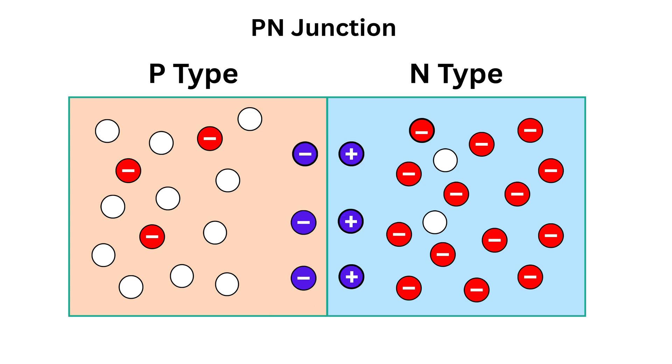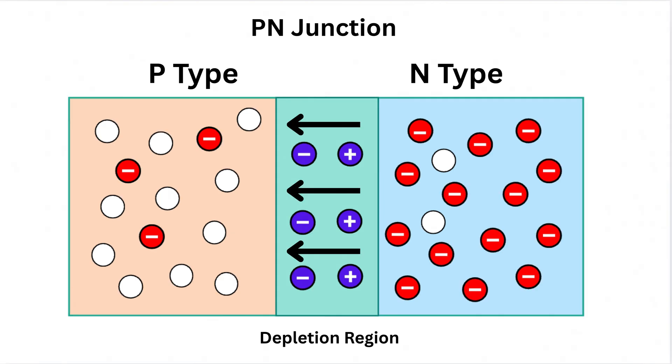So now near the junction, a layer of positive charges is left behind on the N side and a layer of negative charges builds up on the P side. This creates a special region around the junction where there are no free electrons or holes left to carry current. This area is called the depletion region. It's like a barrier or a dry zone, emptied of all the mobile charge carriers that could normally move and create current. See, there will be an electric field generated because of these charges in this direction. So now this electron will feel a kind of repulsive force due to this electric field.